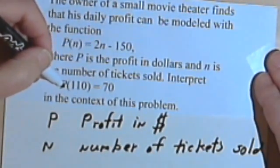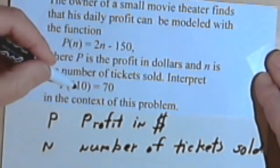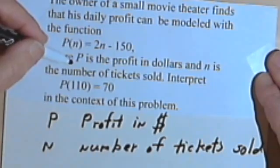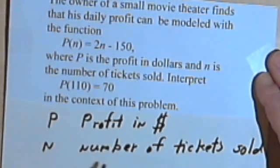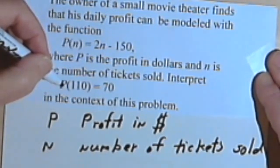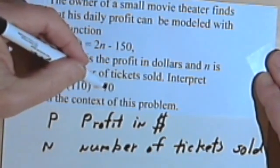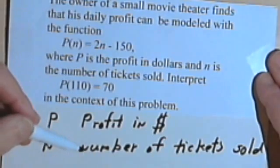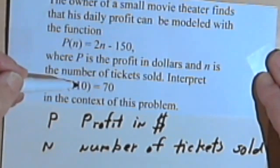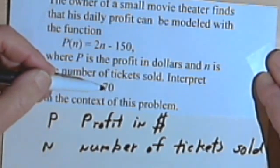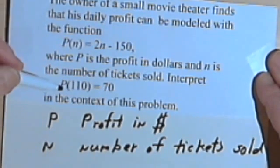So p of 110, now the 110 has replaced the n, so that means when the number of tickets sold is 110, this whole thing equals 70, which is what p equals, and p is the profit in dollars. So when 110 tickets are sold, the profit in dollars is 70 dollars. And that's all there is to it.